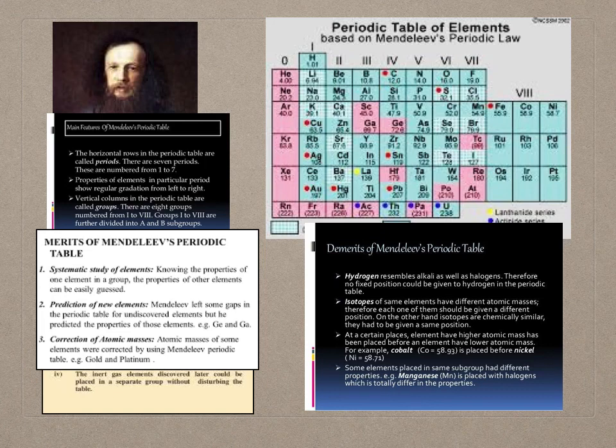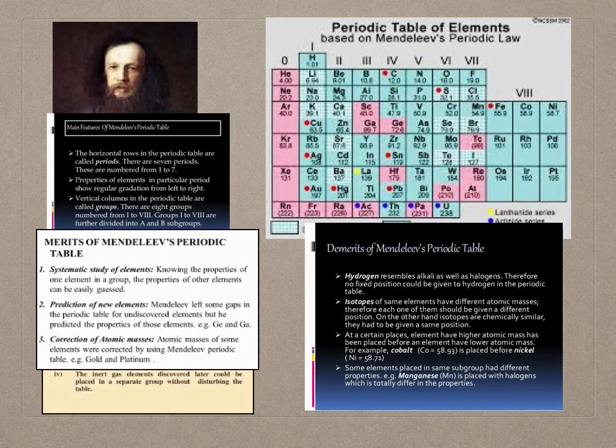At certain places, an element with a higher atomic mass was placed before an element with a lower atomic mass. For example, cobalt with atomic mass 58.93 is placed before nickel with atomic mass 58.72. Furthermore, some elements placed in the same subgroup had very different properties — for example, manganese was placed with halogens, even though its properties are totally different from theirs.